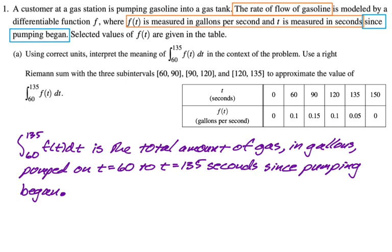Now we also have to approximate this using a right Riemann sum. So we're going to start off by writing our integral. And then this is an approximation. So we're going to say is approximately equal to. And then we go to the table. We're going from 60 to 90, which is 30. And then a right Riemann sum. So at 90, we get 0.15.